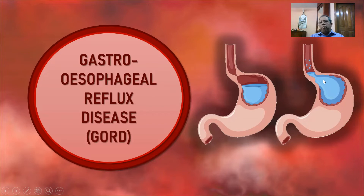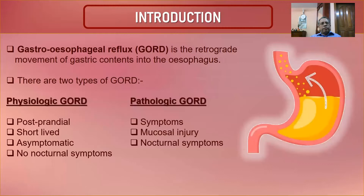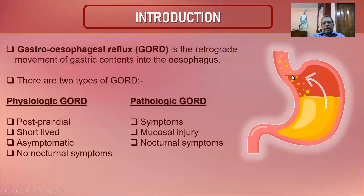GORD is the retrograde movement of gastric contents into the esophagus. There are two types: physiological and pathological.